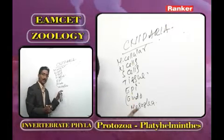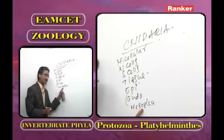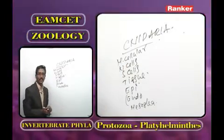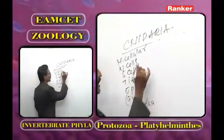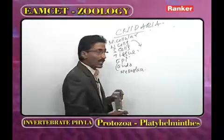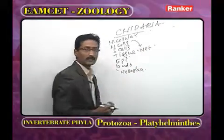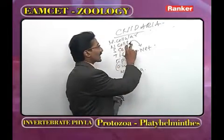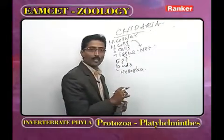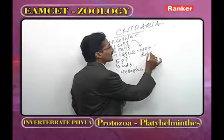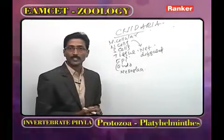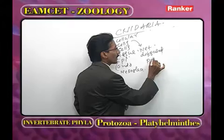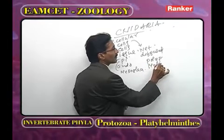Epidermis corresponds to pinacoderm, endodermis to choanoderm, and mesoglia to mesohyal of sponges. In Cnidaria, nerve cells are in the form of a net, and impulse propagation is diffused. In all Cnidarians, the zooids present are polyp and medusa.